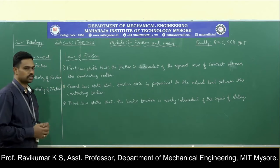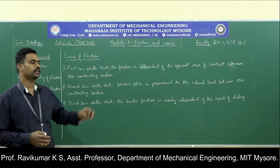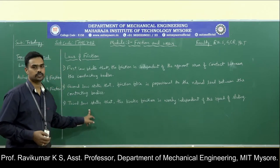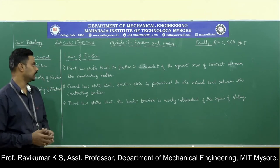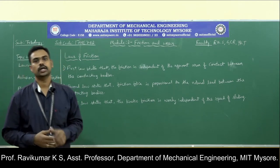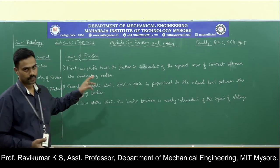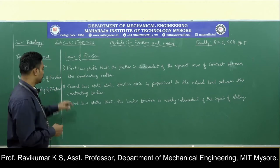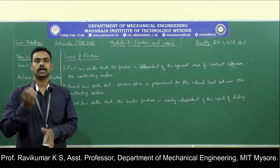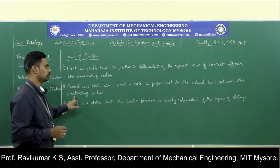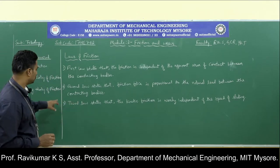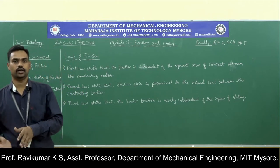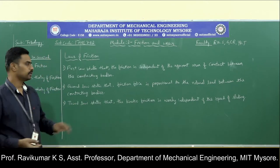There are three laws of friction. The first two laws are introduced by the scientist Amantans and the third law is introduced by Coulomb. The first law states that friction between the rubbing surface is independent of the apparent area of contact. The second law states that friction is directly proportional to the normal load between the contacting bodies. The third law states that kinetic friction between the rubbing surface is nearly independent of the sliding velocity or the speed of sliding.